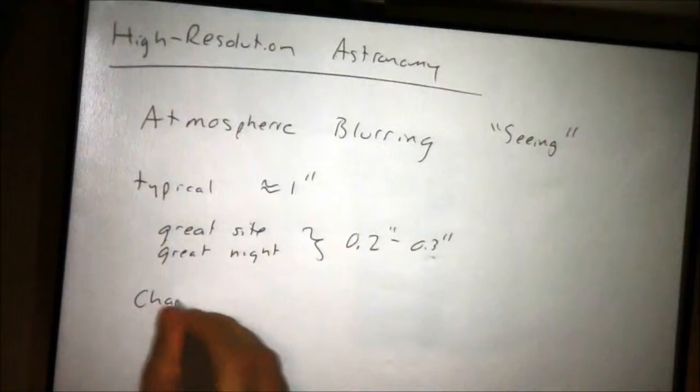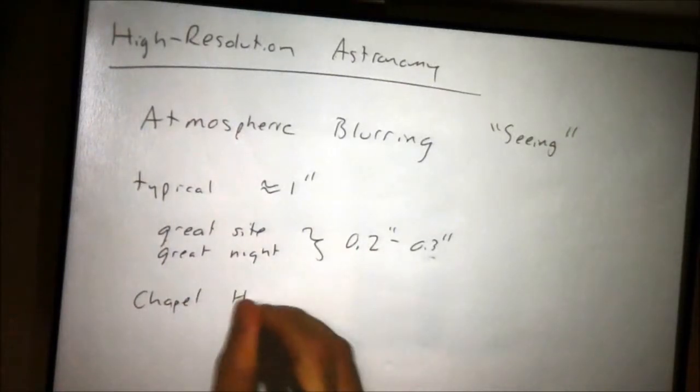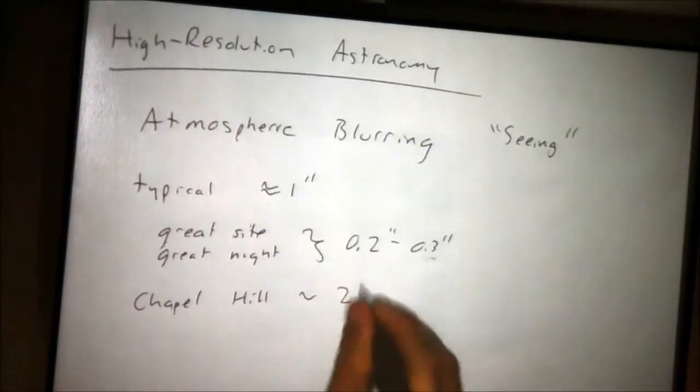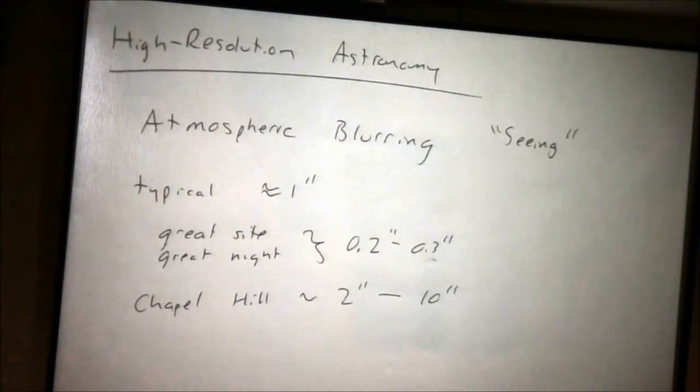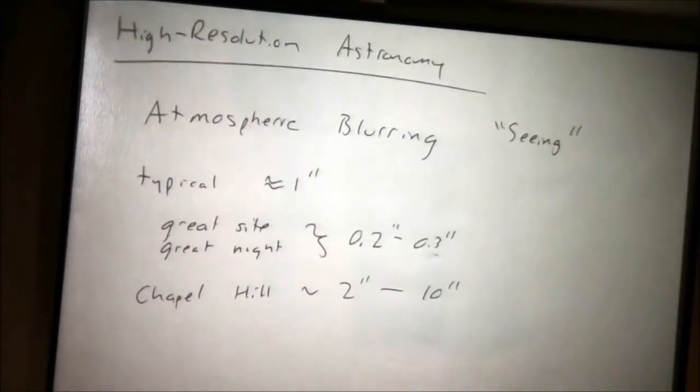Chapel Hill, we have our campus telescope. Chapel Hill is typically maybe two arc seconds to sometimes ten arc seconds. Sometimes it's really crappy here. This is not a place where you put telescopes for real scientific use. Our campus telescope is more for education and public outreach, for this reason primarily. Also the bright skies. But let's explain the process of atmospheric blurring.